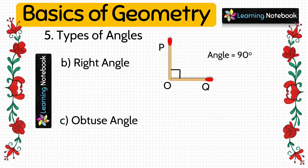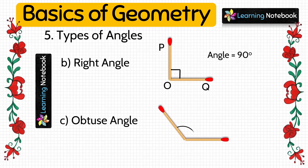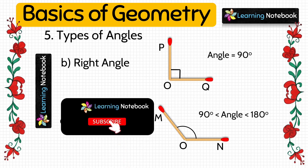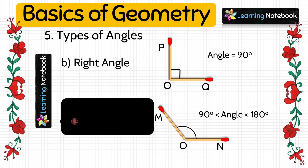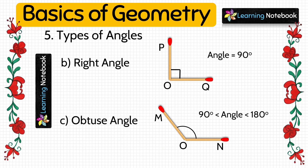The next type is obtuse angle. An obtuse angle is one which measures greater than 90 degrees but less than 180 degrees. We will take two matchsticks and paste them to form obtuse angle MON.